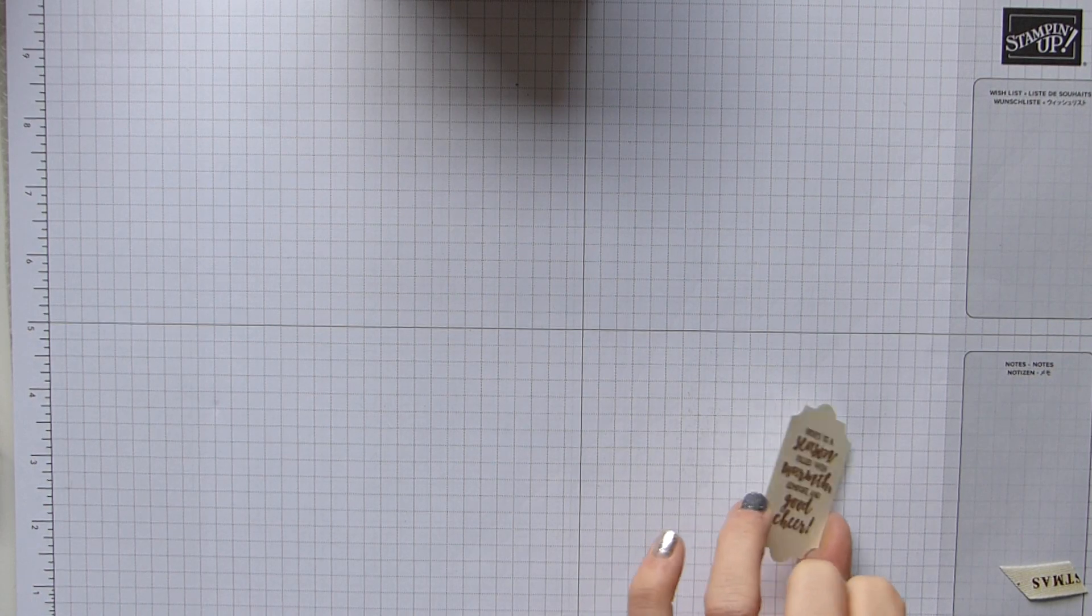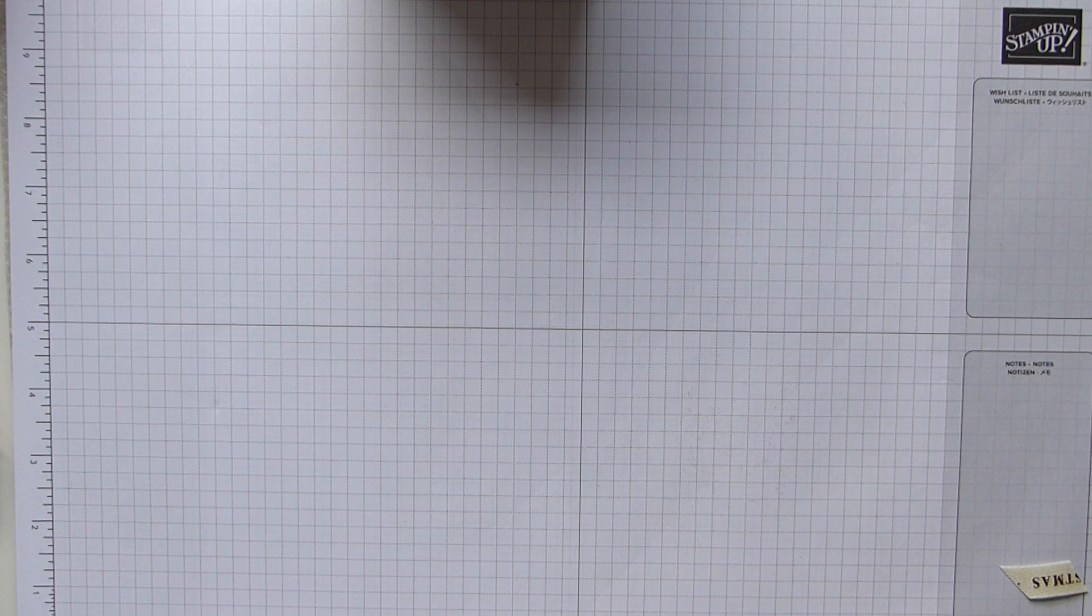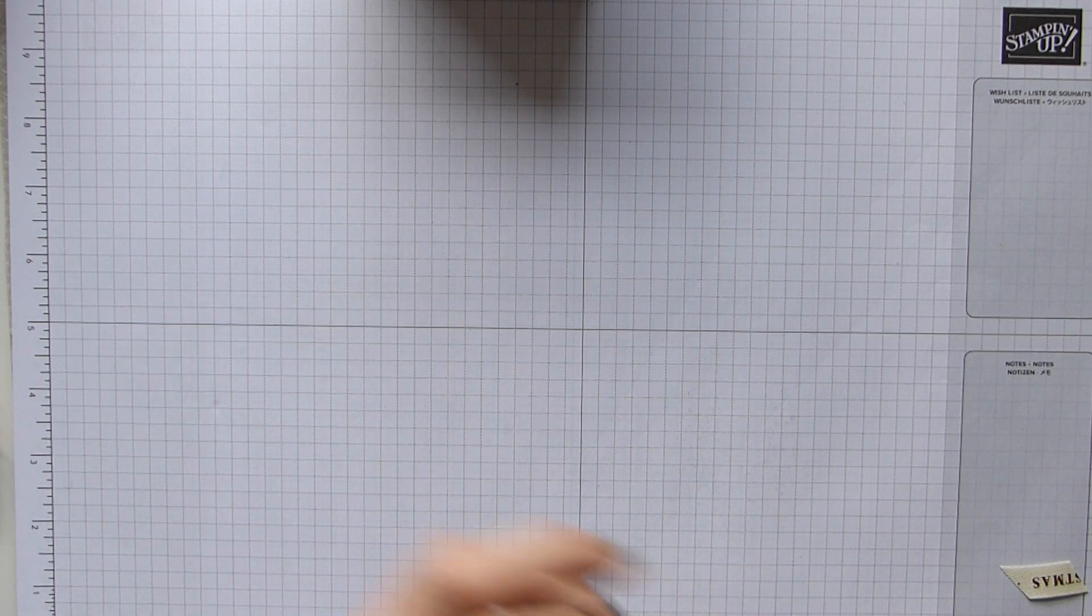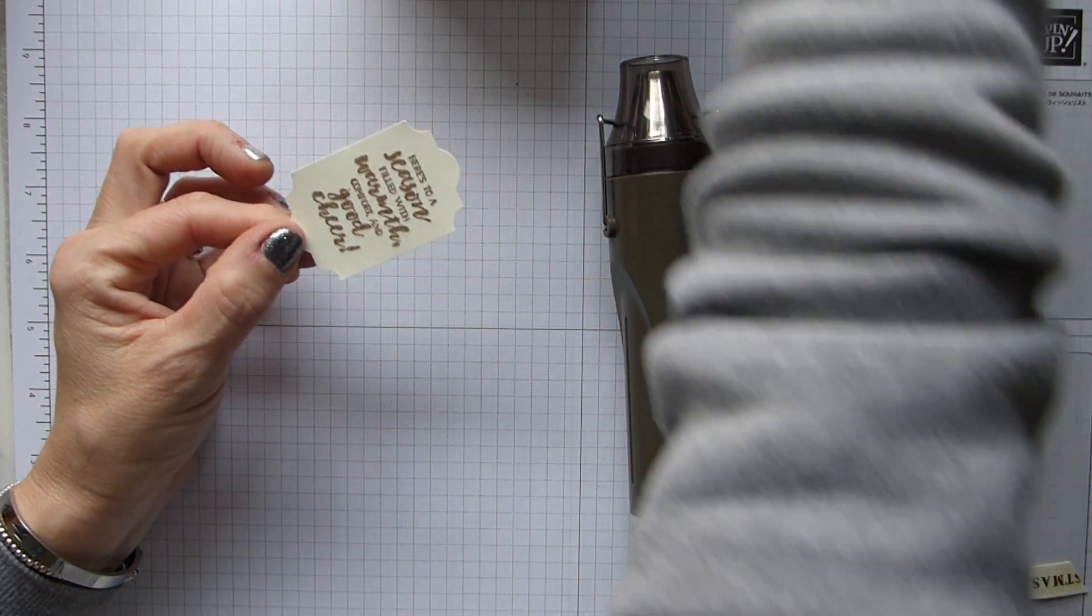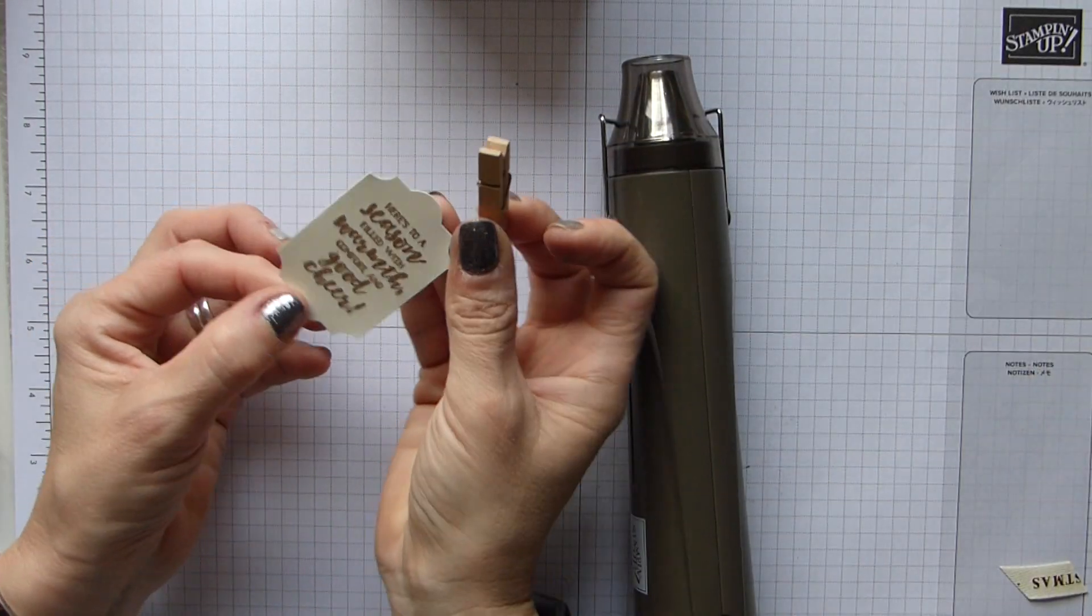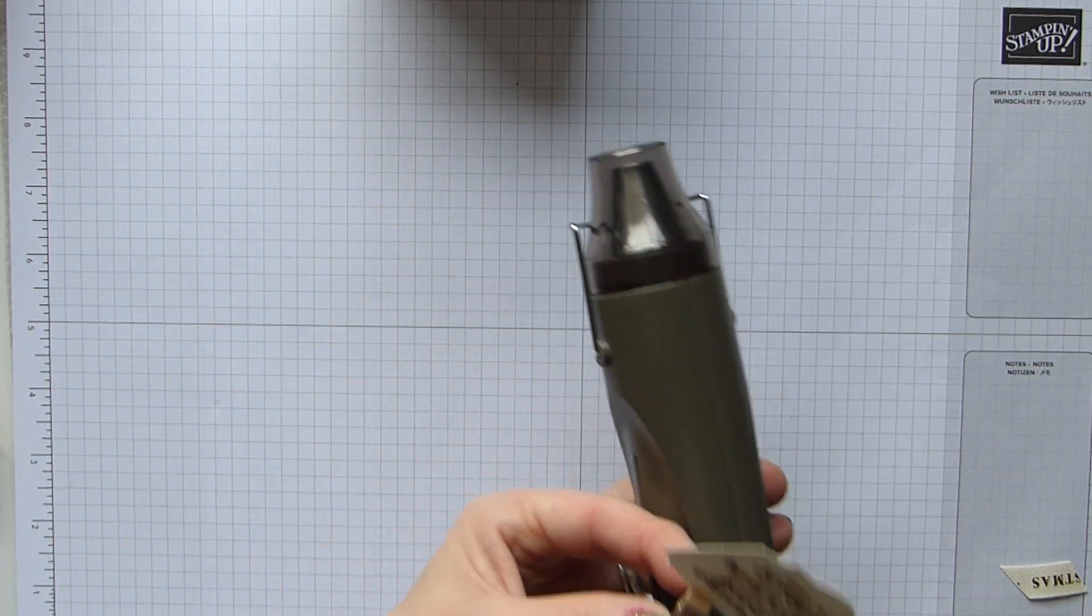And then obviously just very carefully pick this up because you don't want to smudge or touch that Versamark. Give it a little tap to clear the excess off. And then wherever my heat tool is, I'm going to apologize for the clatter and bang because it's underneath my scoreboard now. Here it is.